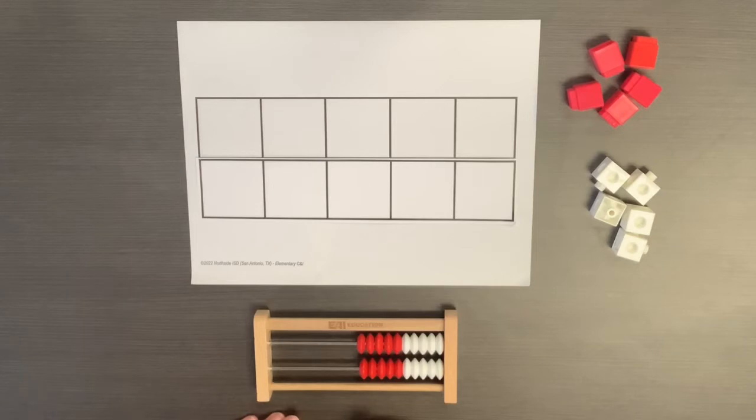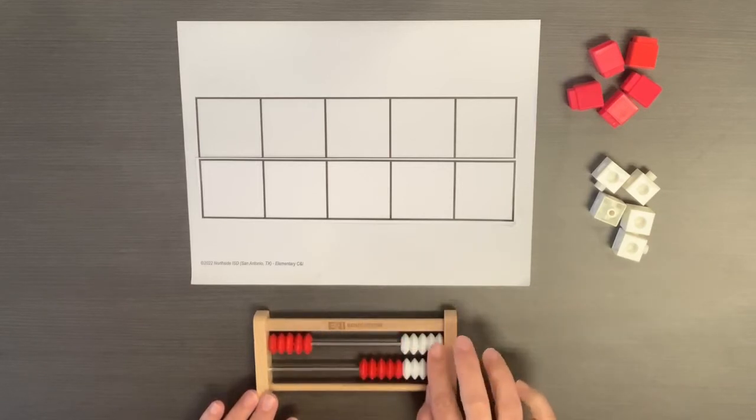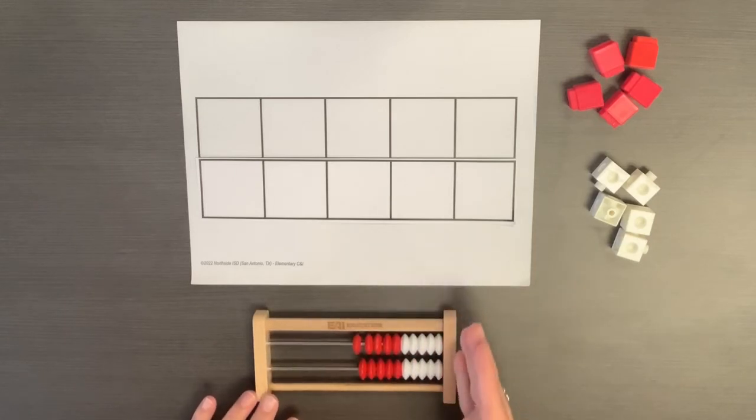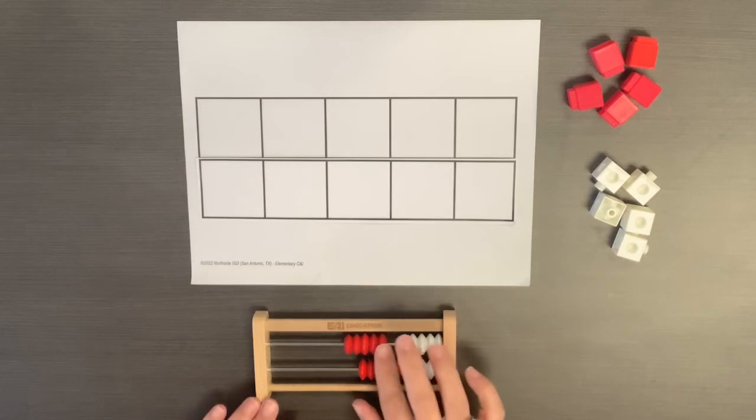Rekenreks support subitizing and counting because the beads are visual models of the benchmarks of 5 and 10. The beads always start on the right side of the Rekenrek. As we count the beads, we move them to the left side.